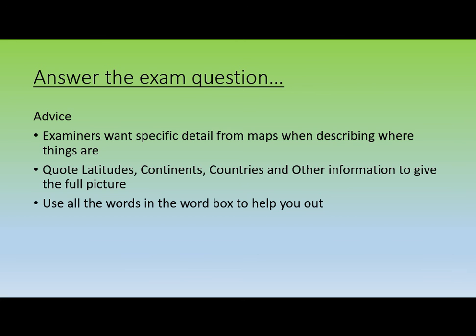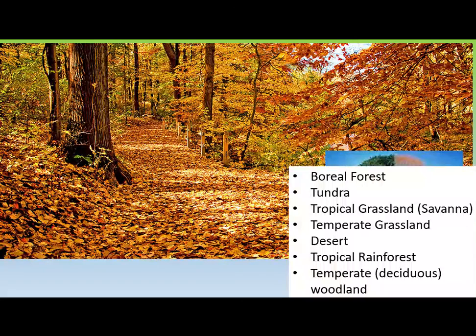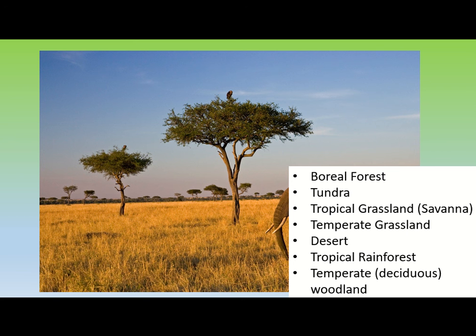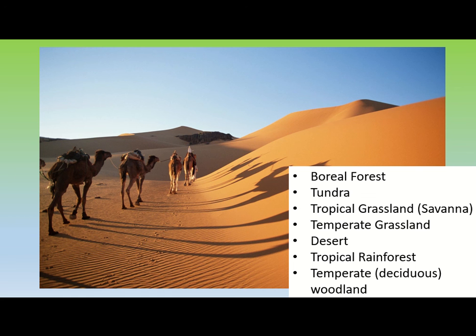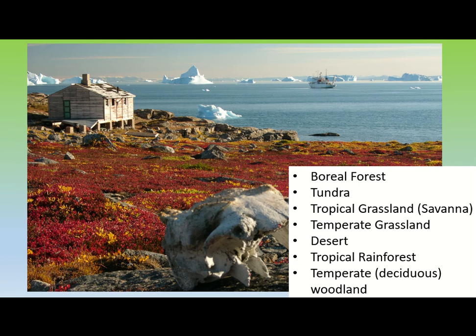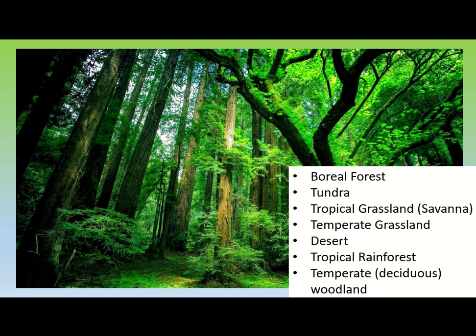The final activity tests your knowledge: look at each picture and identify which biome it relates to — you can shout at the screen as much as you like. The answers are: temperate or deciduous woodland; tropical grassland or savannah; boreal forest; desert; tundra; temperate grassland; and finally tropical rainforest.